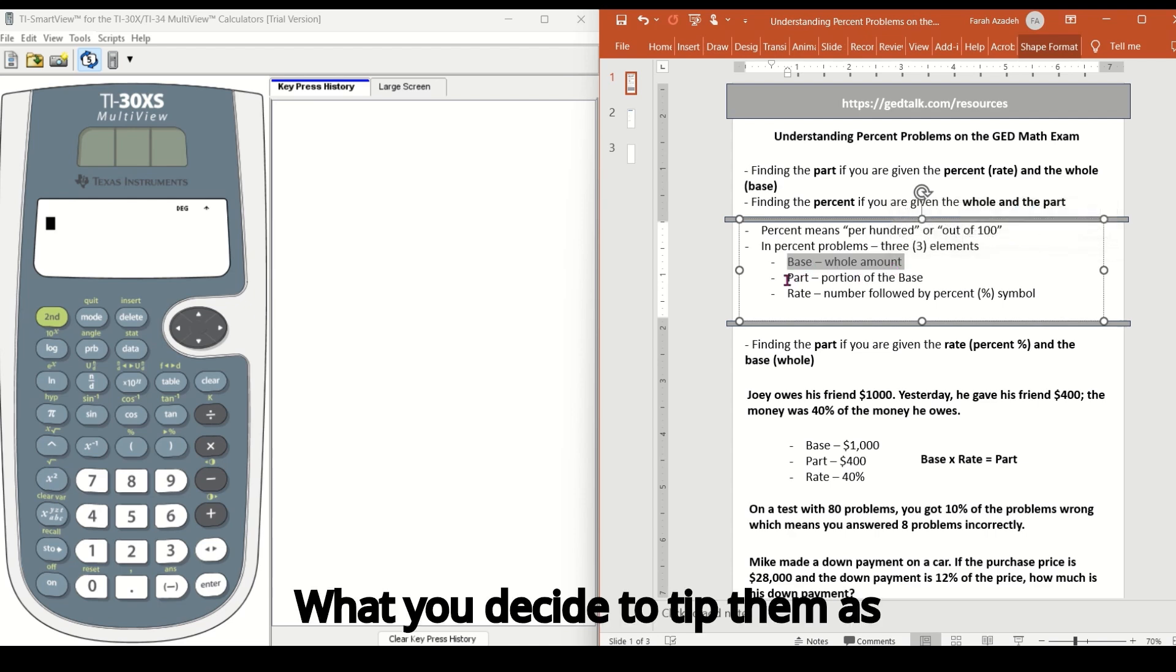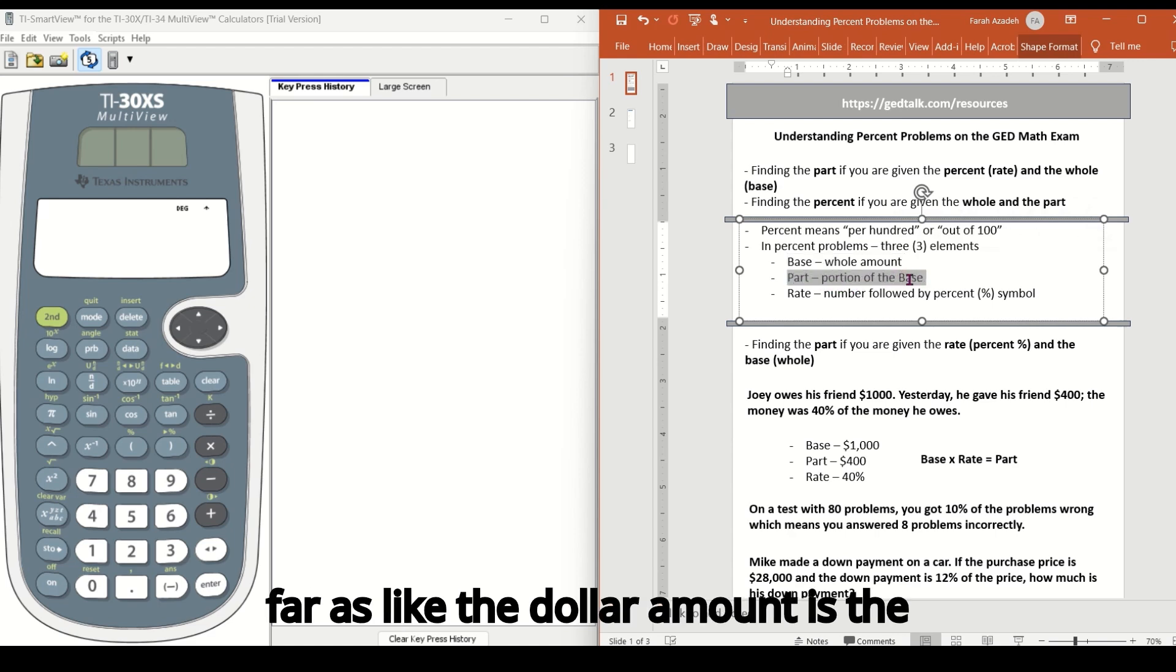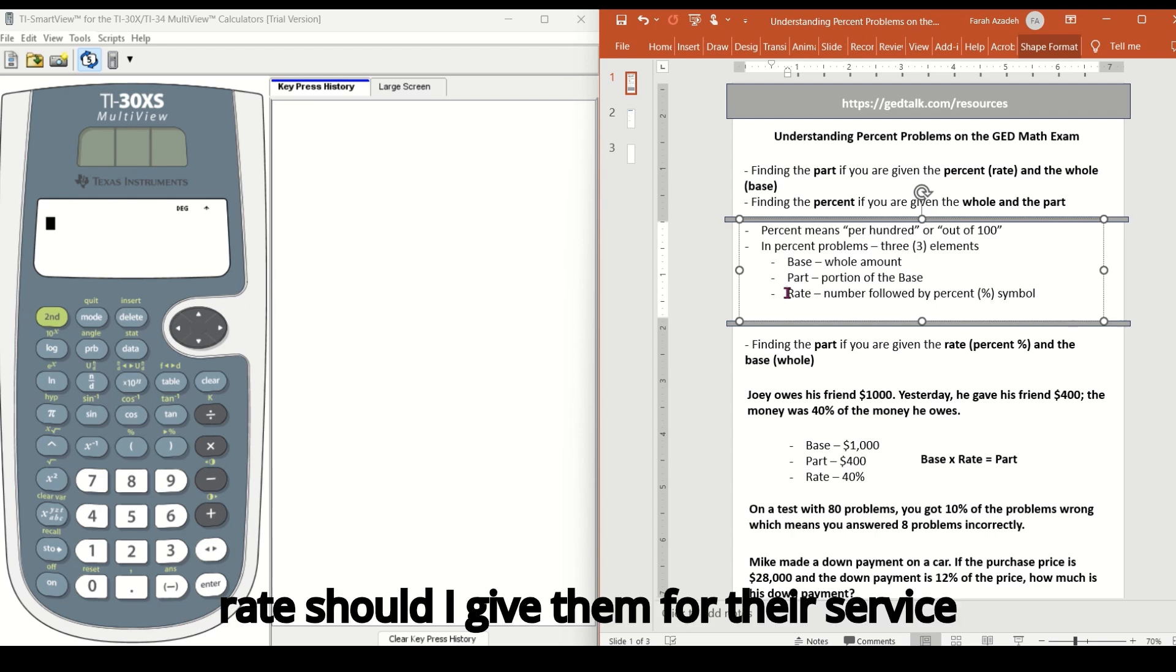What you decide to tip them as far as like the dollar amount is the portion of the base. But usually we don't just say like, okay, my bill was $50, I'm going to give a $5 tip.